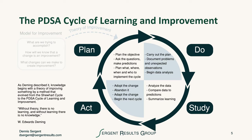It's important for us to think about starting this process with a theory of improvement. We each have an idea about what might improve our process or the problem we're trying to fix. As Deming described it, knowledge begins with a theory of improving something by a method, and that evolved from the Shewhart cycle to the PDSA cycle of learning and improvement. I quote Dr. Deming: without theory, there's no learning, and without learning, there is not knowledge. This Plan, Do, Study, Act cycle is a way for us to test our theory of improvement and see whether it works or not.